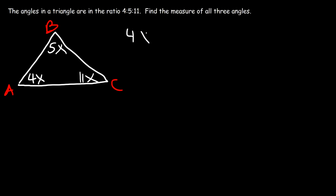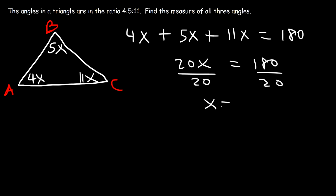So these three angles, 4x, 5x, and 11x, has to add up to 180. 4 plus 5 plus 11 is 20. So these three add up to 20x. So now we need to divide both sides by 20 in order to find the value of x. So what's 180 divided by 20? Well, at first, we can cancel a 0. So it's equivalent to 18 divided by 2, which is 9. So x is equal to 9.